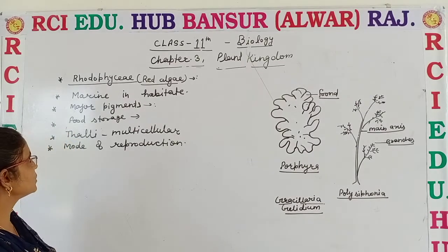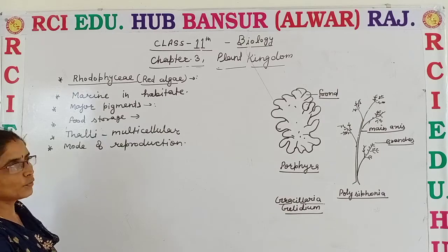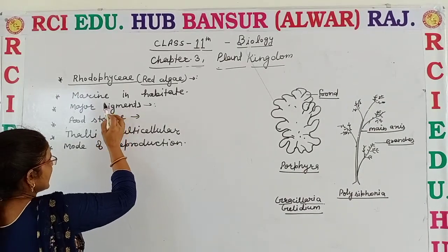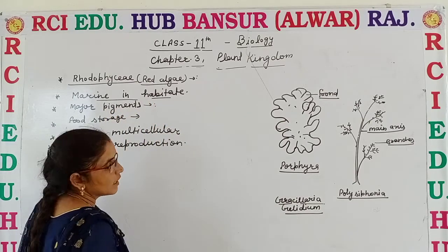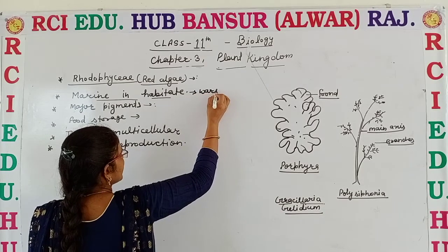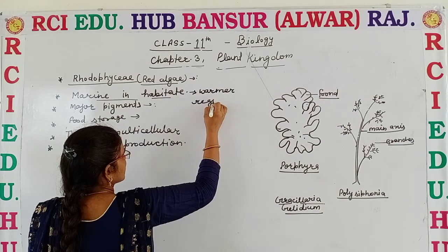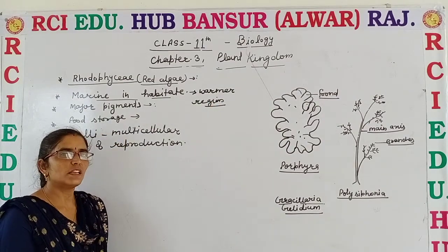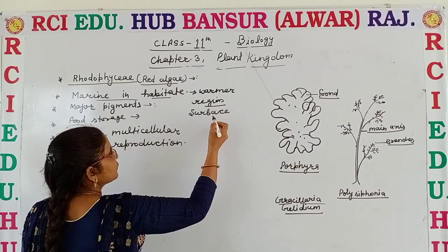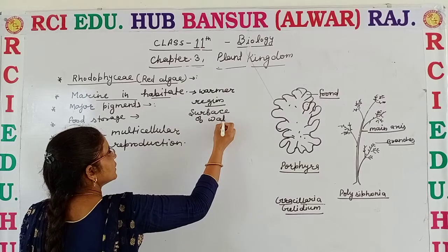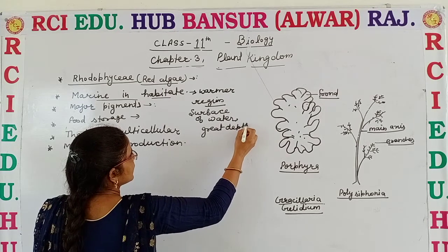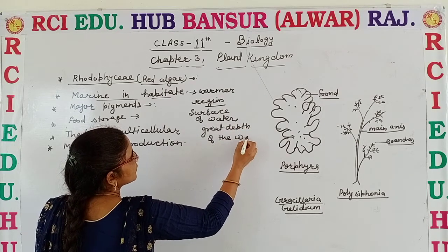Here we discuss about the third class of algae — Rhodophyceae, that is known as Red Algae. We discuss about the general features of Red Algae. It is marine in habitat and especially present in warmer regions. This algae is mainly found at the surface of the water as well as at great depths of the water.